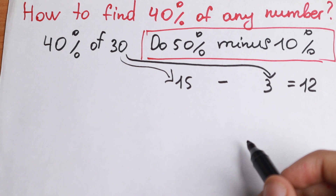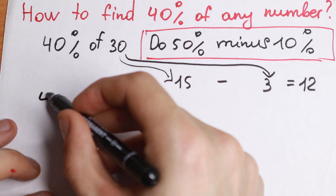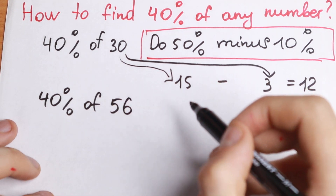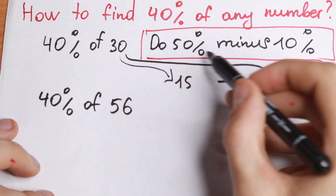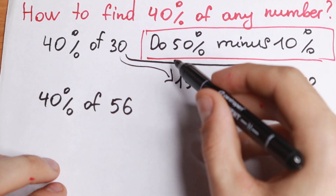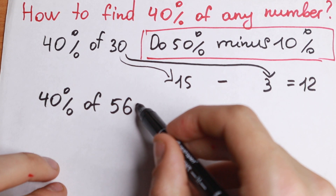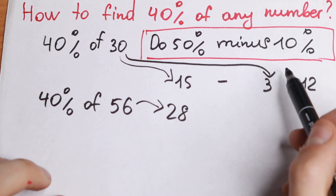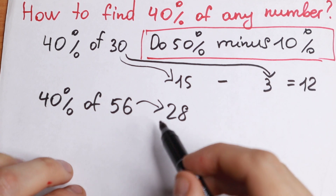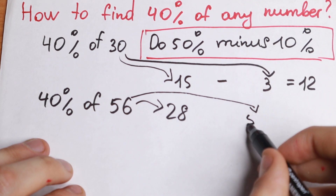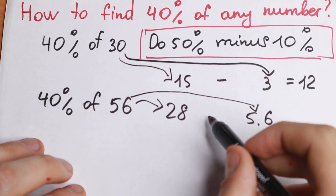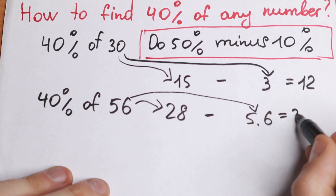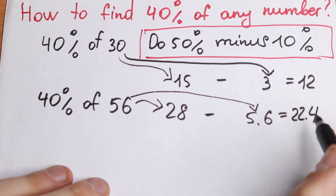Let's solve one more example. We need to find 40% of 56. First, find 50% of 56 — that gives us 28. Then subtract 10% of 56, which is a decimal answer: 5.6. So 28 minus 5.6 gives us our answer: 22.4.